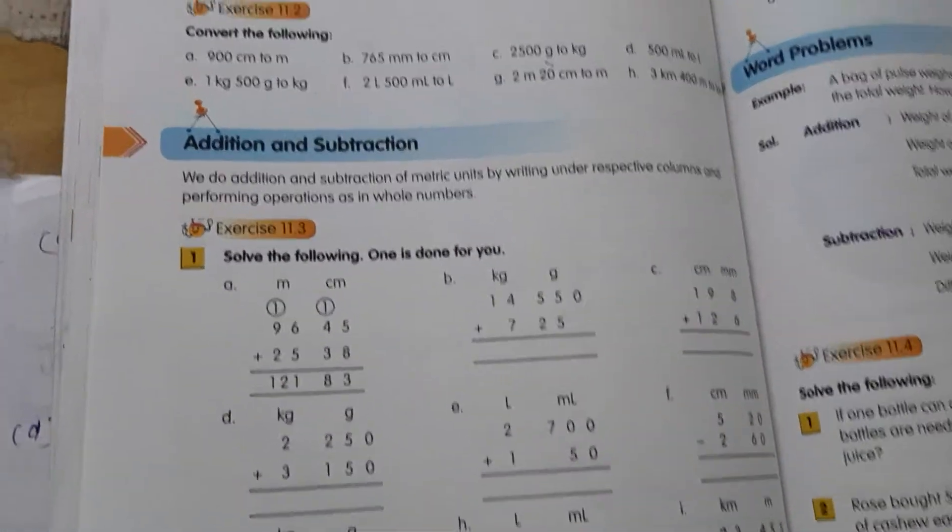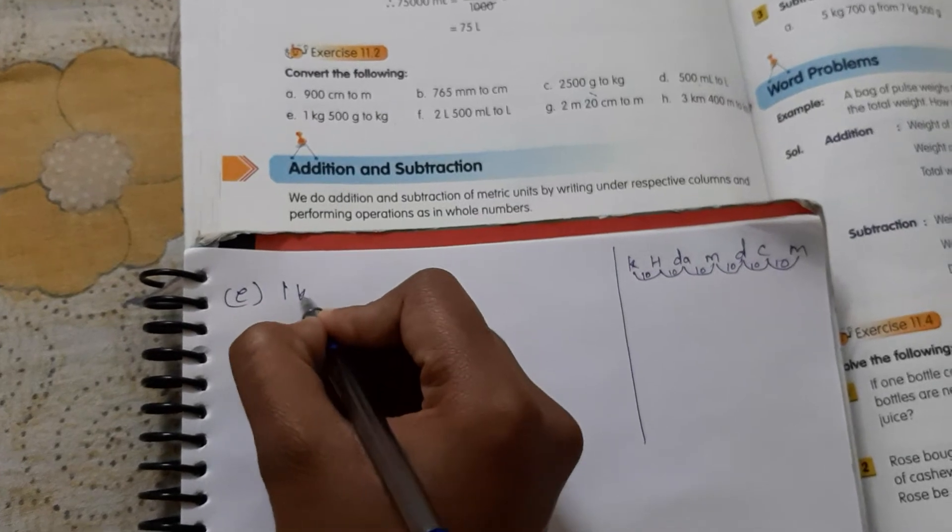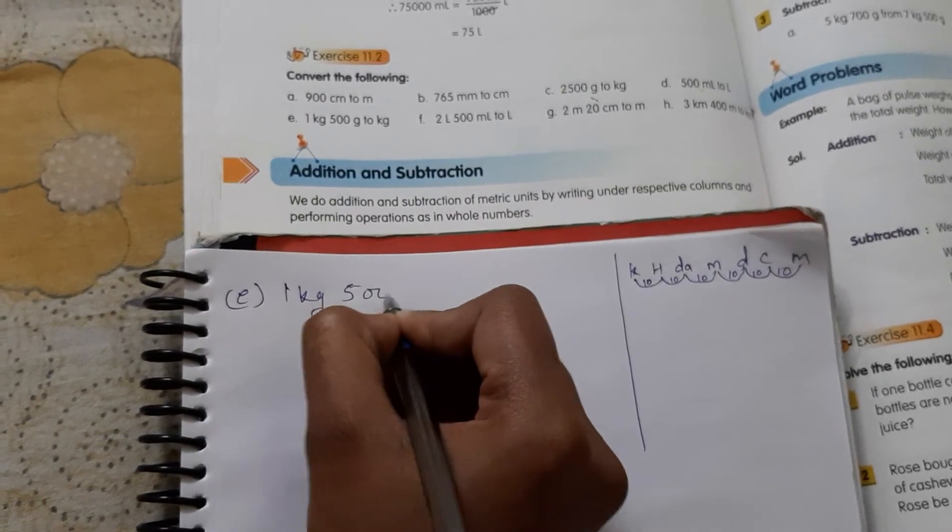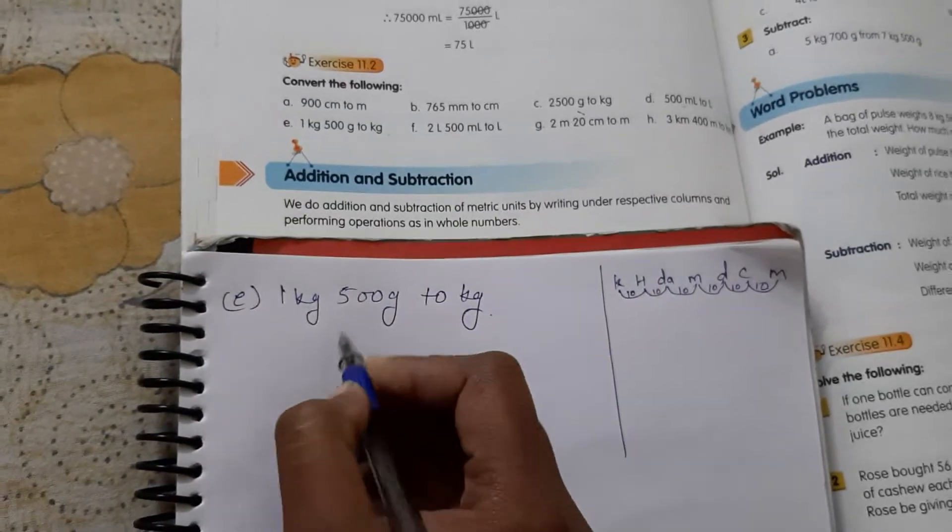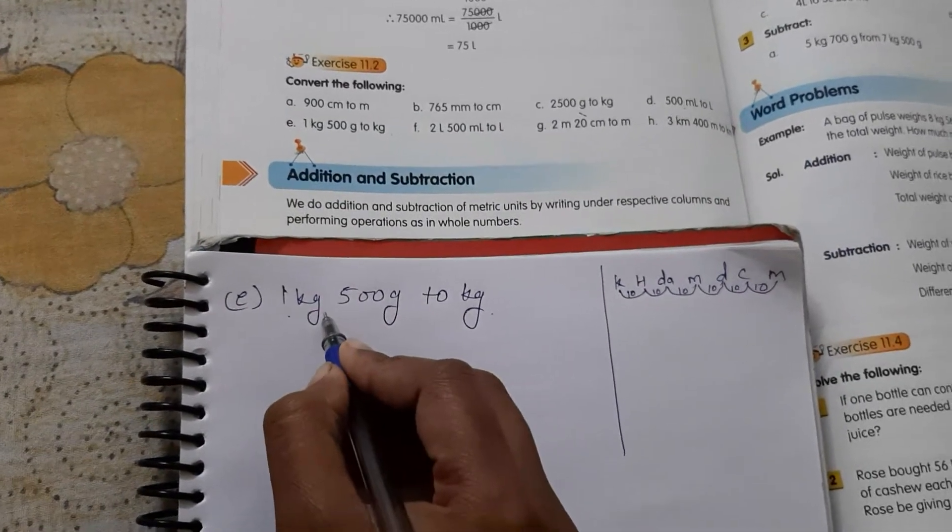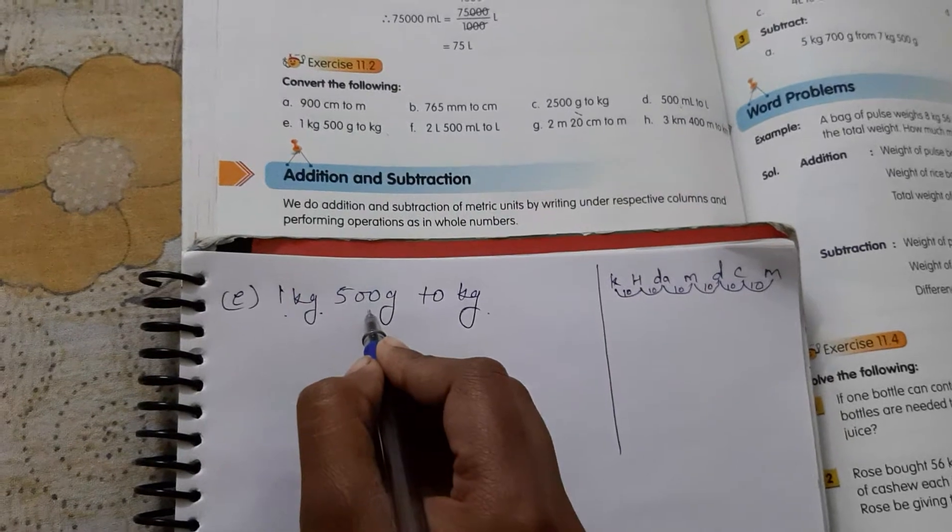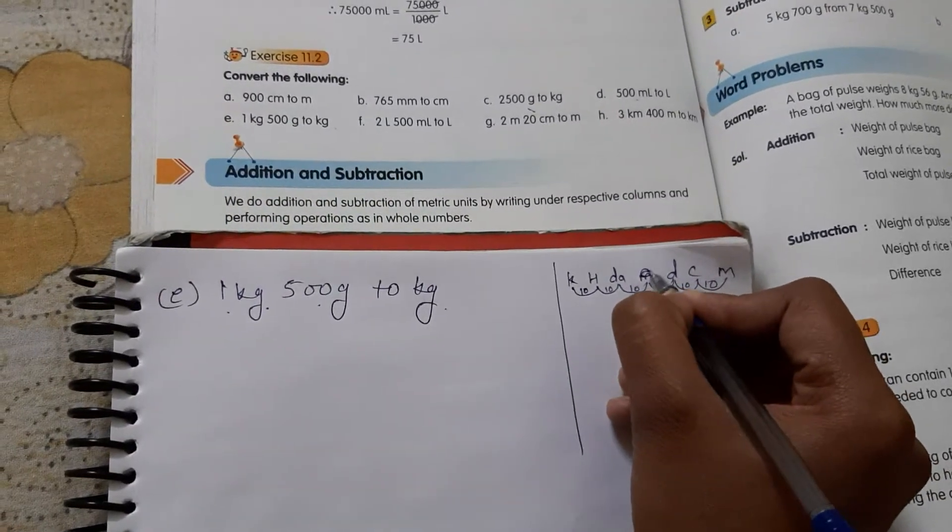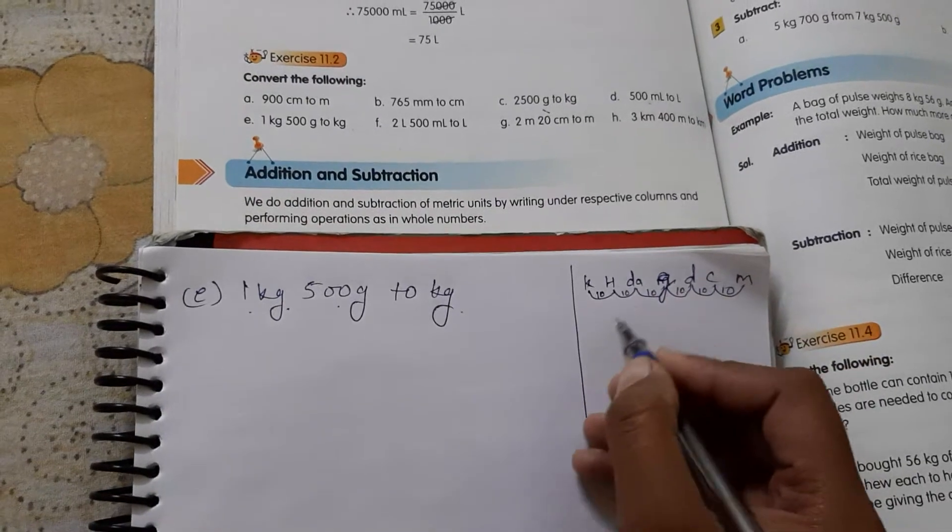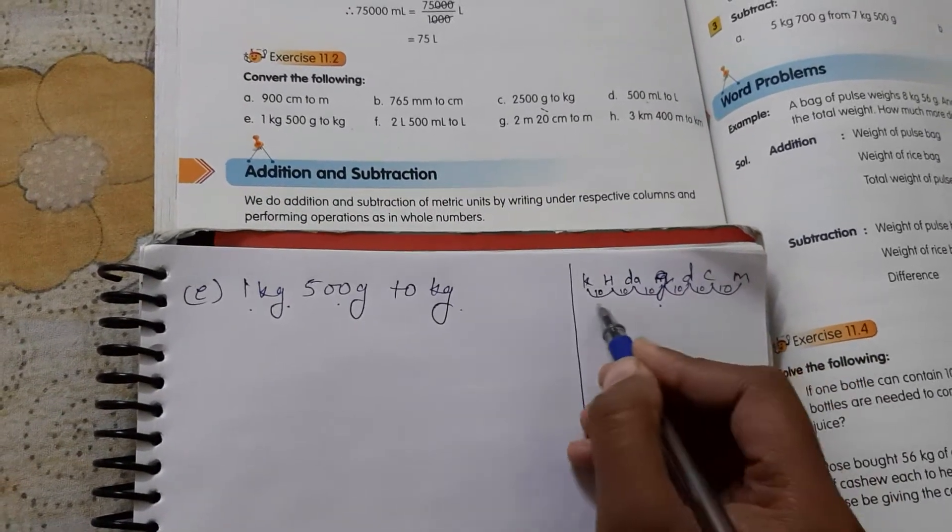1 kg 500 gram to kg. We have to change to kg. What is already in kg, we don't need to change. But what is in gram, we have to change to kg. Gram comes in the basic unit here.